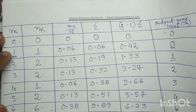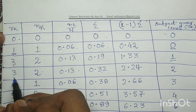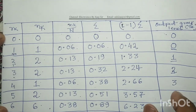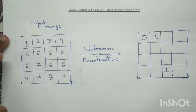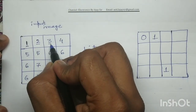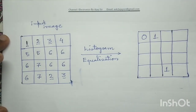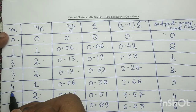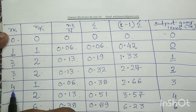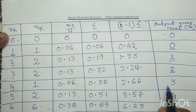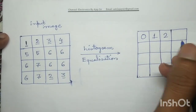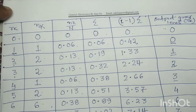Similarly for input gray level 3: in the output image it maps to output gray level 2. Gray level 3 occurs twice in the original image, so those two positions are written as 2 in the output image. For input gray level 4, it maps to output gray level 3. Gray level 4 occurs only once in the input image, so that position is written as 3 in the output image.